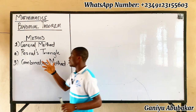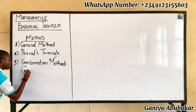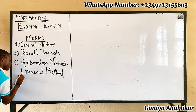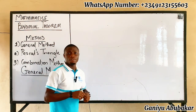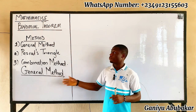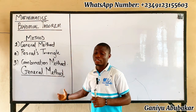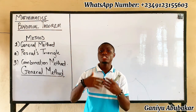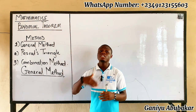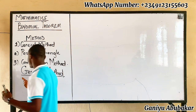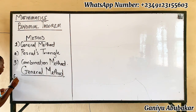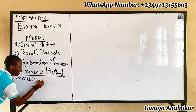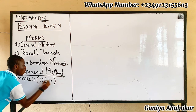Let's now look at the first method called the general method and see what we get. Let's start with the first concept behind the general method of binomial theorem. I'll be explaining this using some examples. Let's have example one: expand (a + b)².